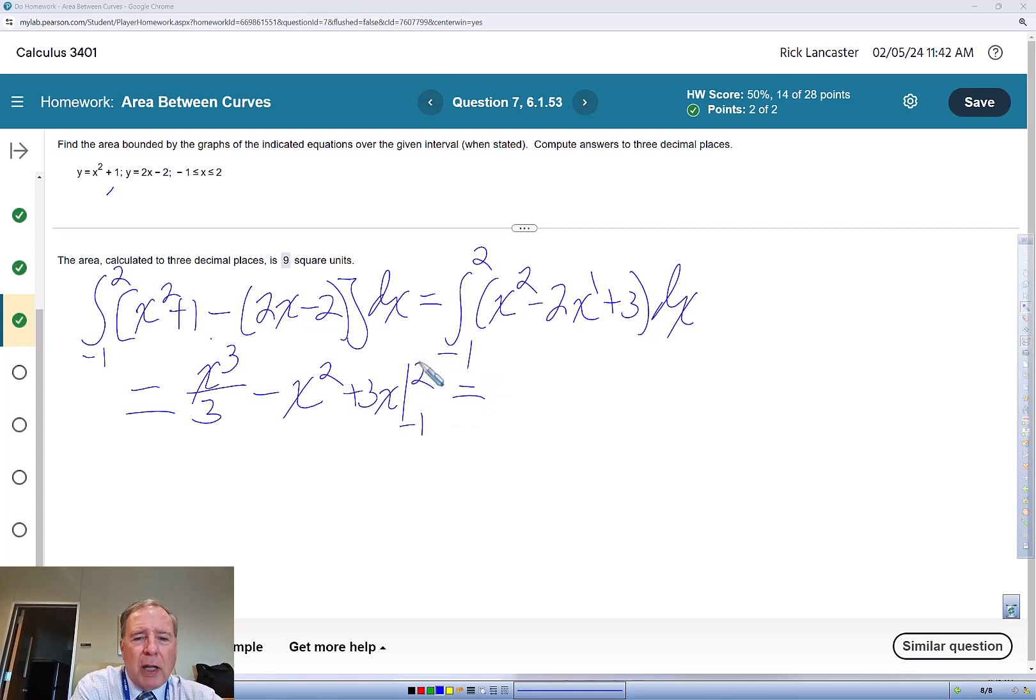I'm going to evaluate at the upper limit. 2 cubed is 8, so that gives me 8 thirds minus 2 squared plus 3 times 2, then minus in a grouping symbol. That's going to be negative 1 cubed over 3, then minus negative 1 squared, and plus 3 times negative 1.